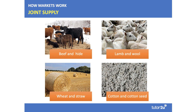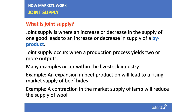The next concept is joint supply. Joint supply is where an increase or decrease in the supply of one good leads to an increase or decrease in the supply of what's called a by-product. Joint supply occurs when production yields two or more outputs — the main product and the by-product. Many examples occur within the livestock industry. An expansion in beef production — the size of the beef herd goes up — will ultimately lead to an increased supply of beef hides. A contraction in the market supply of lamb, as lamb stocks go down, might reduce the supply of wool.